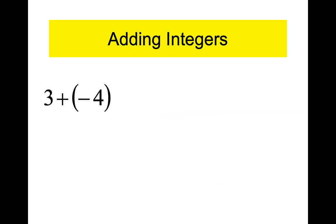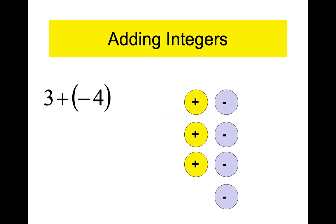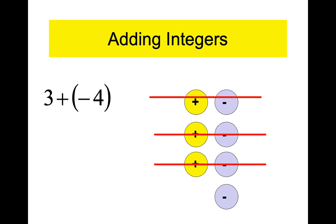Let's see that again. What's the first number? Three. So three coins with a plus symbol. To that I'm going to group four negative coins. I put a plus coin next to a minus coin — one plus one minus is zero, so those cancel. One plus one minus is zero — those cancel too. I'm left with one coin, and it's negative. So the answer to three plus negative four is negative one. The coin method works every time.